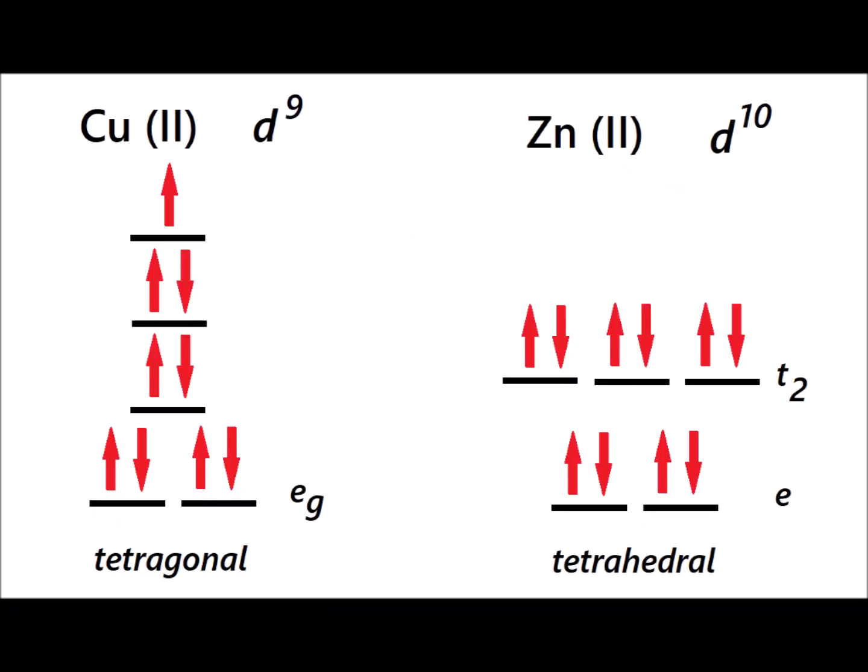Our final two metals are relatively easy to summarize in that copper two plus is d9 and it forms tetragonally distorted transition metal complexes. And then zinc two plus is always d10. It's always going to be low-spin and tetrahedral.